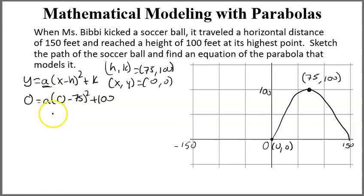5,625. So I get 0 equals 5,625A plus 100. Subtract 100 and divide by 5,625. So negative 100 divided by 5,625 gives me that A is negative 4 over 225. And because it goes downward, we know it's negative.